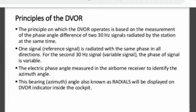The first 30 Hz signal transmits at equal phase in north, south, east, and west — in any direction the phase shift will be equal. But the second 30 Hz signal transmits in the north with 0 degree phase, in the west with 90 degree phase shift, in the south with 180 degree phase shift, and in the east with 270 degree phase shift. In any direction, the phase shift will be equal to the angle of that direction with respect to magnetic north.